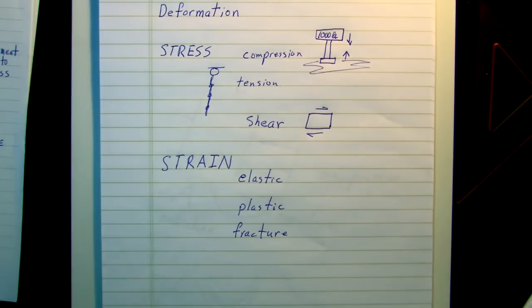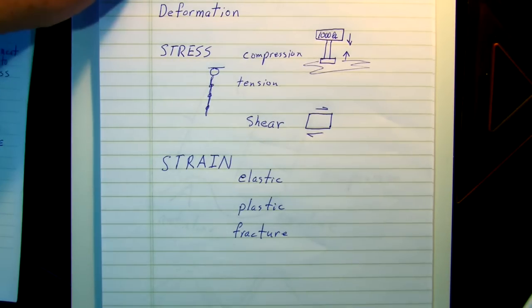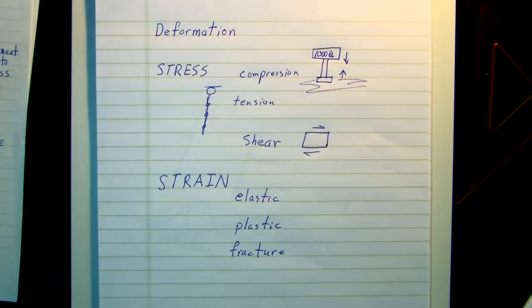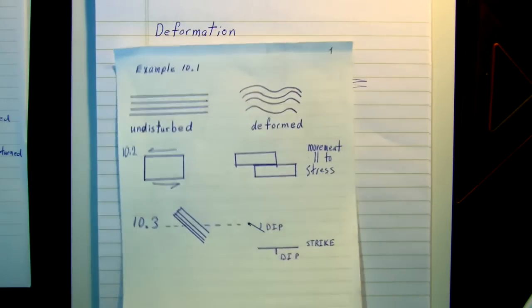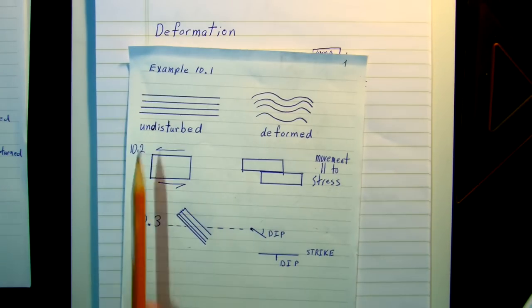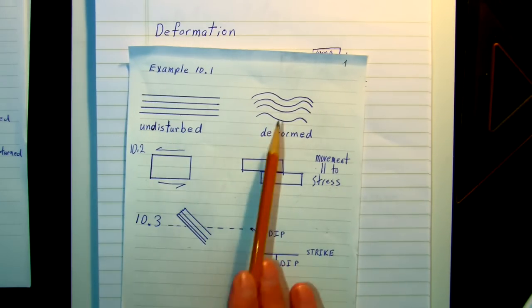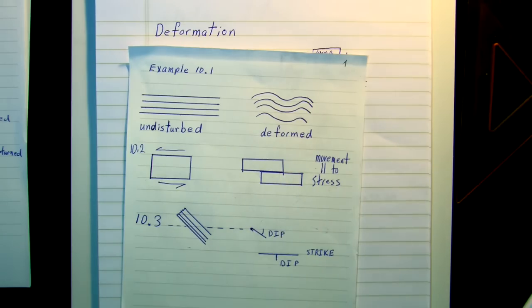The first thing we need to understand is the term deformation. Deformation is just a general term that refers to changes in the shape or volume of rocks and layers of rocks within the Earth. Here we see undisturbed layers. These layers have been deformed.